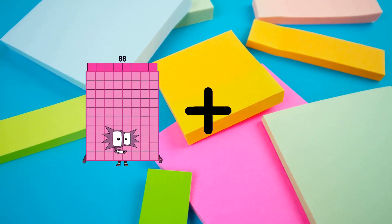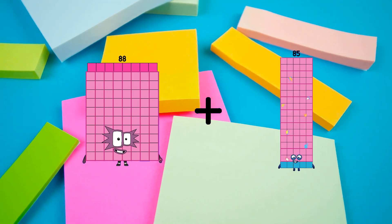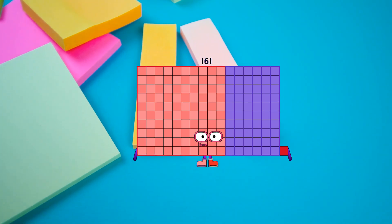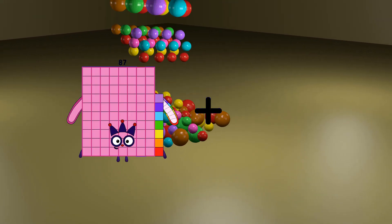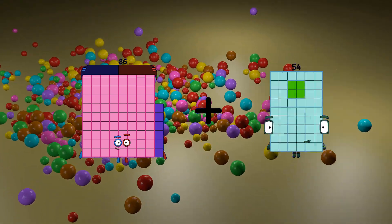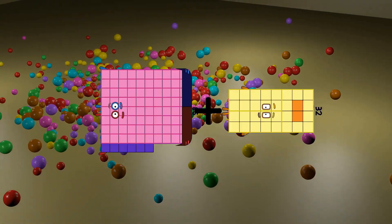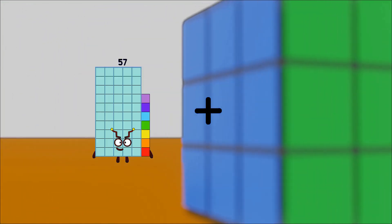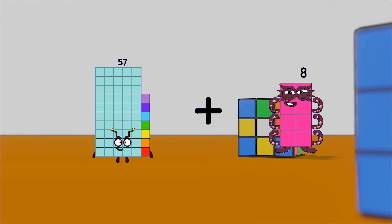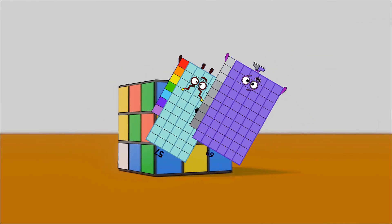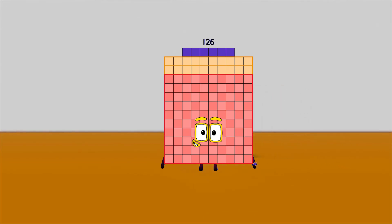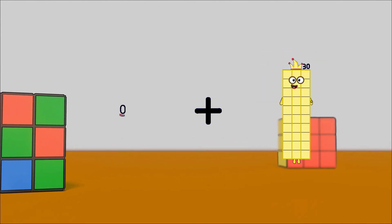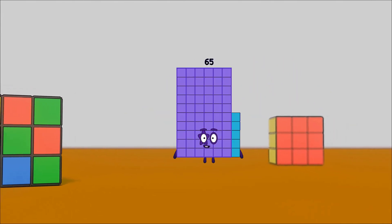88 plus 73 equals 161, 86 plus 32 equals 118, 57 plus 69 equals 126, 0 plus 65 equals 65.